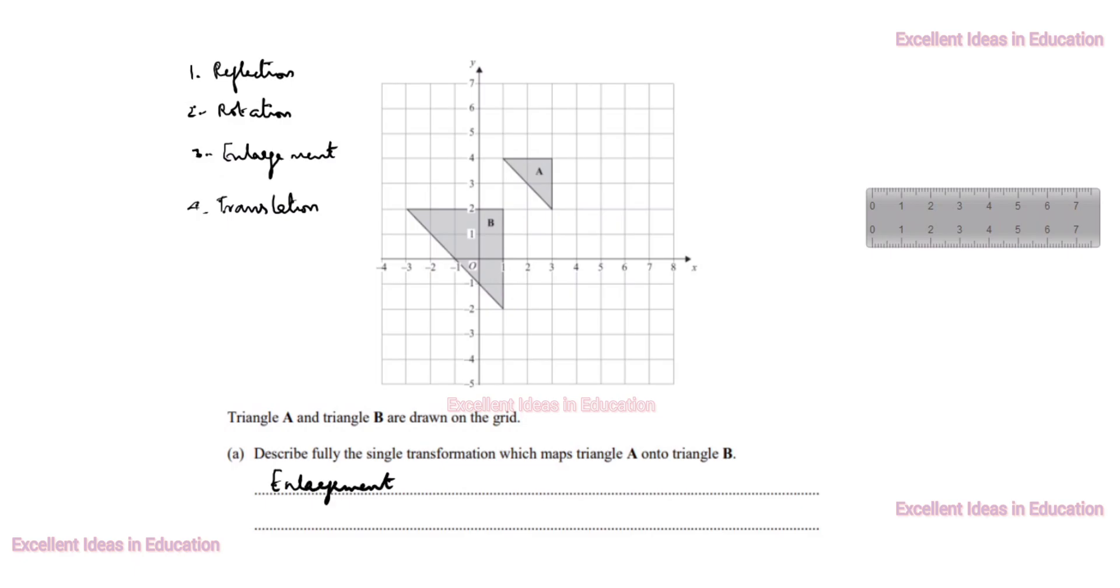After that, what we need to find: triangle A onto triangle B. First we will name this one P Q R. This one is P dash Q dash R dash.